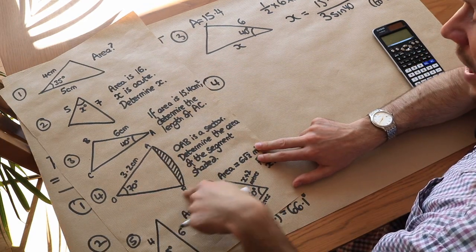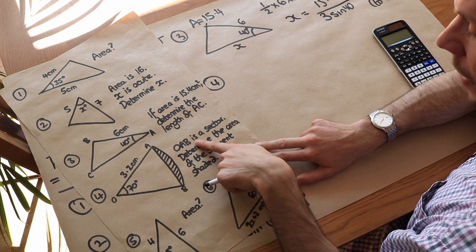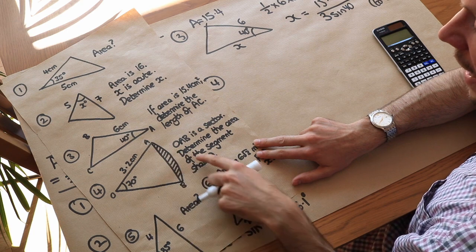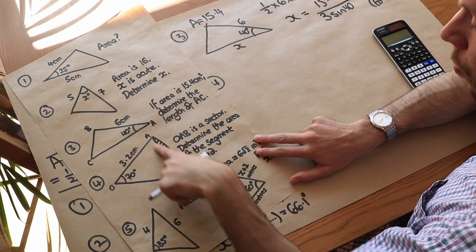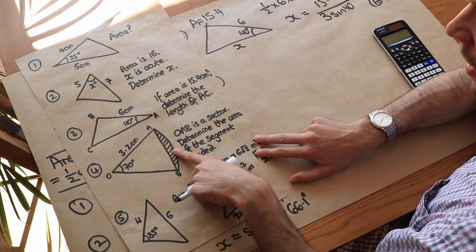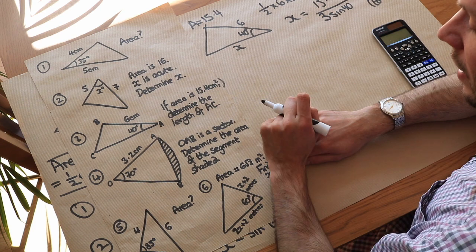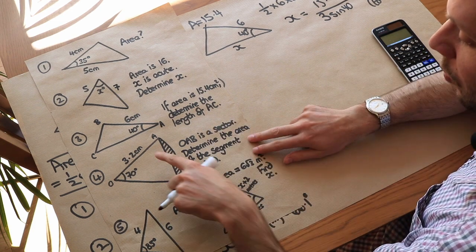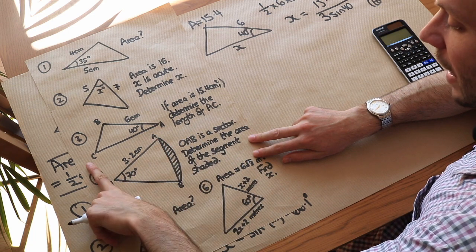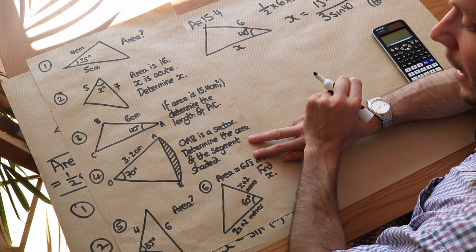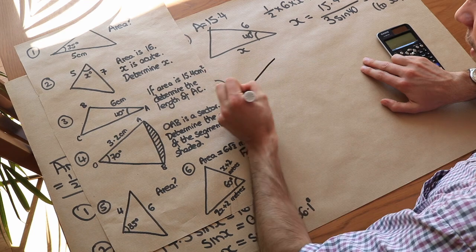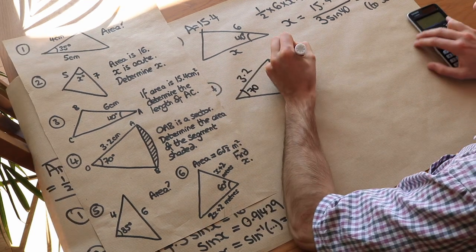For question four, OAB is a sector — a pizza-slice shape. We want the area of the shaded segment, which is the area between a chord connecting two points on the circumference and the arc. The strategy is to find the area of the sector and then subtract the triangle area to leave just the shaded segment.